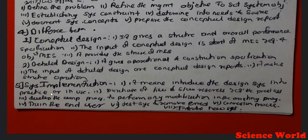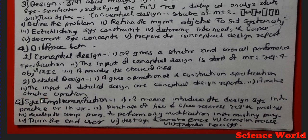We also have System Implementation — how do we do it? It means to introduce the Design System into practice. We use it in practice. This includes the Purchase of Hardware and Software — we purchase the requirements — and then Develop the Computer Program.